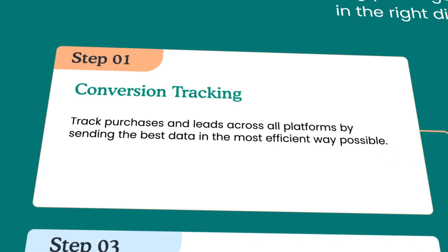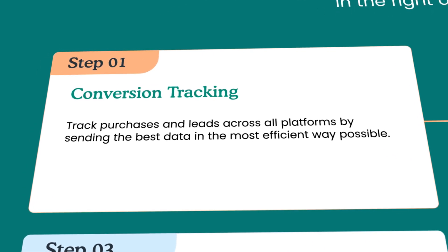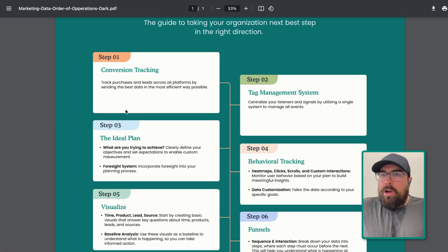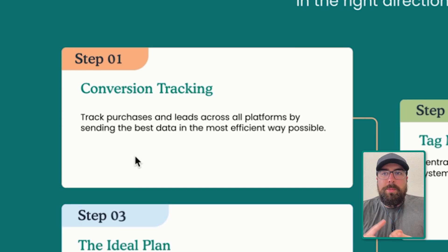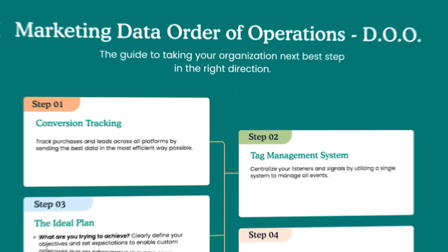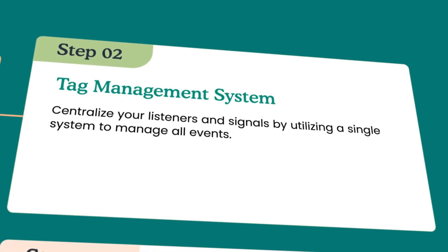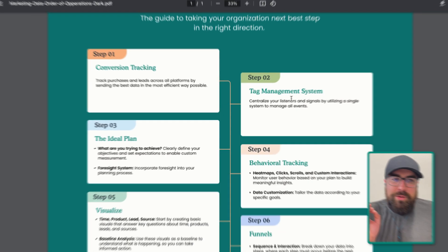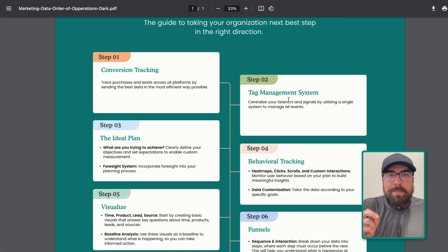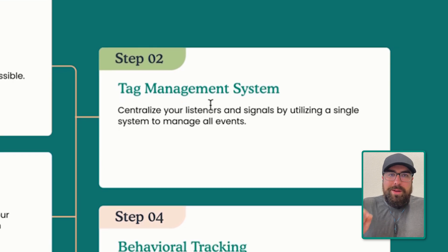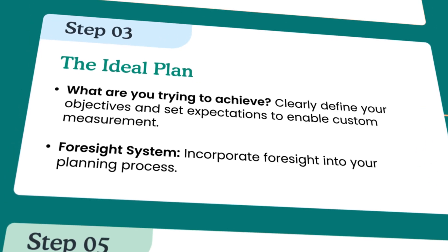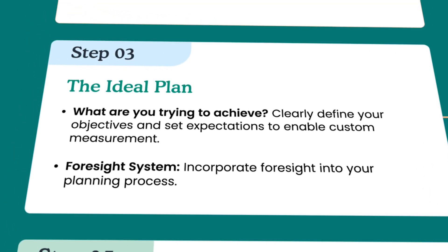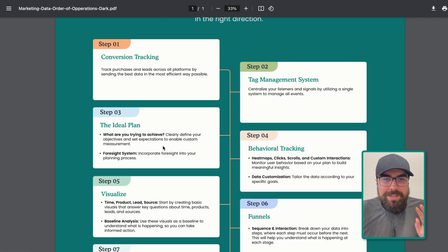Step one is conversion tracking. We want to track purchases, leads, all the intent signals that you have. You need to track those and send those to your destination — you need an analytics platform and your ad platform. You need both. Then we can level up into a tag management system. This is where you start centralizing where your data starts from and where it is going. That is what a tag management system does. You then need your ideal plan — this is where we focus a lot of our efforts. We need to strategize what are we trying to do and what is the outcome that we're intending.